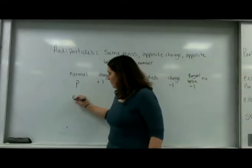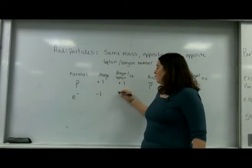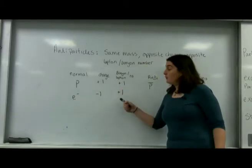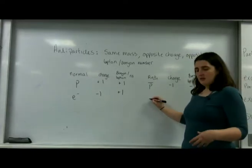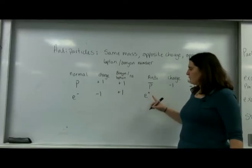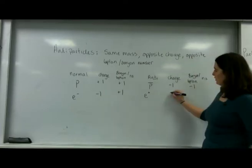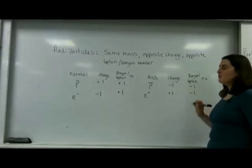An electron normally has a negative charge and a plus one lepton number. But its antiparticle, the positron, has a charge of plus one and a lepton number of minus one.